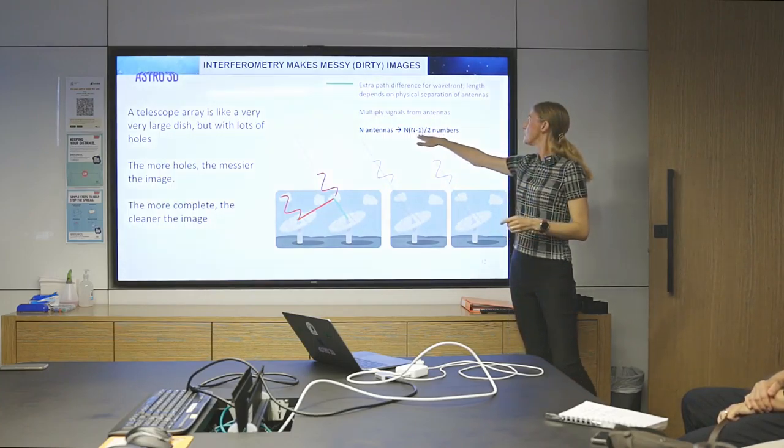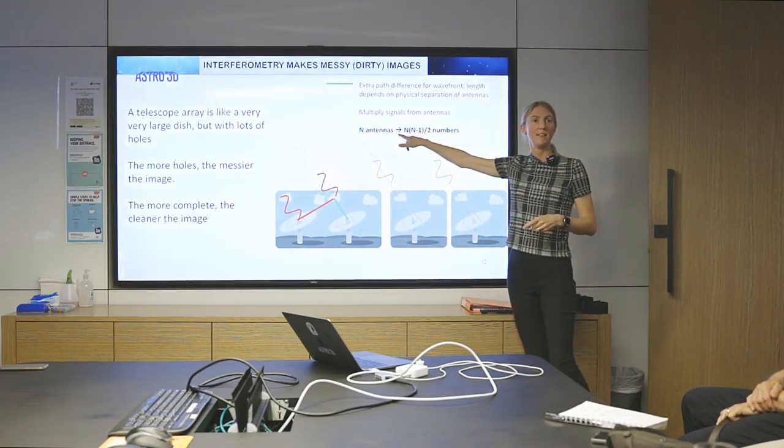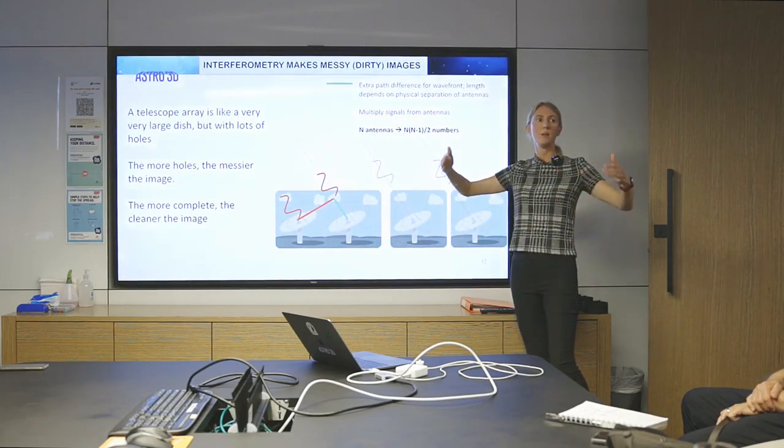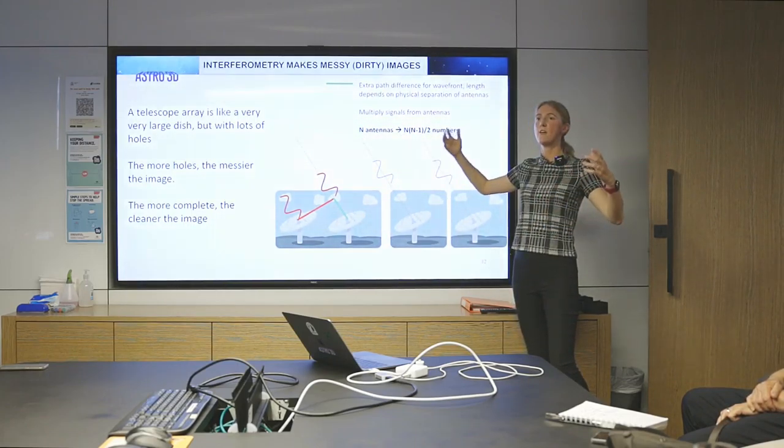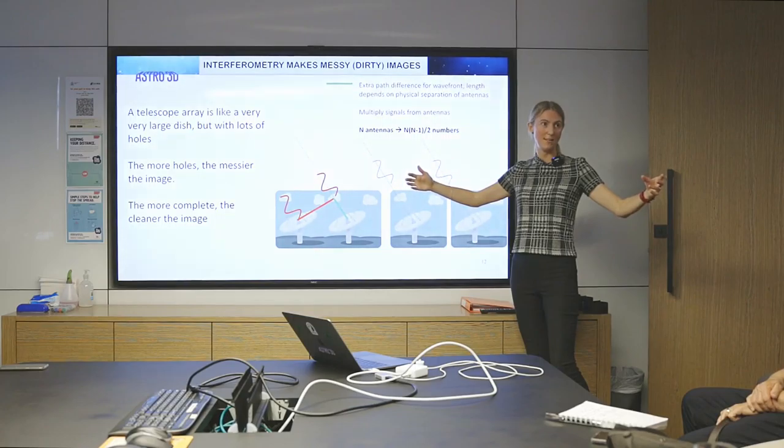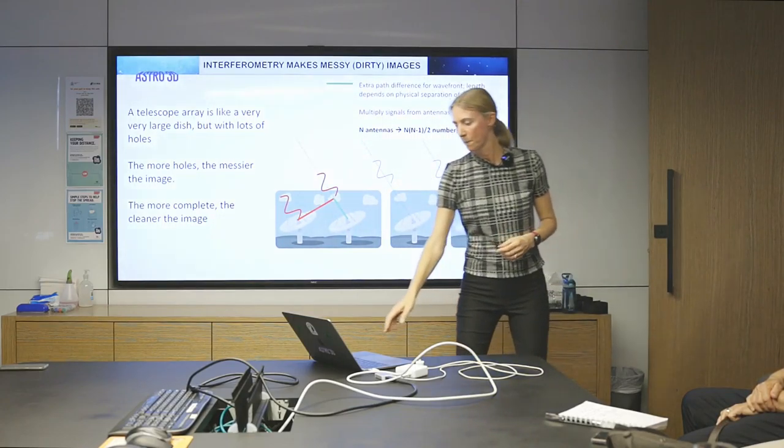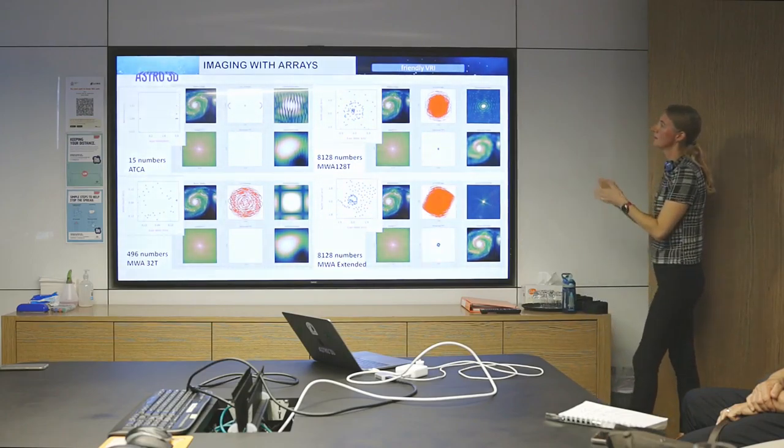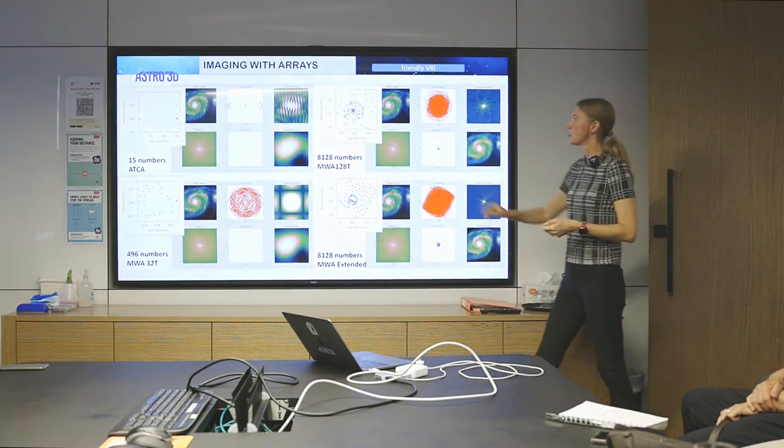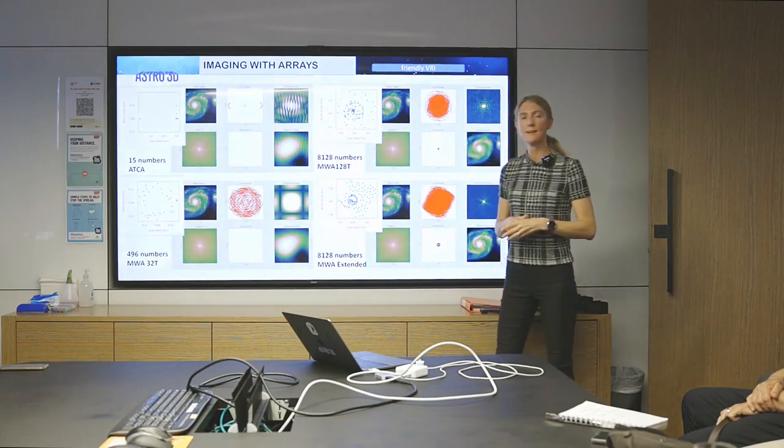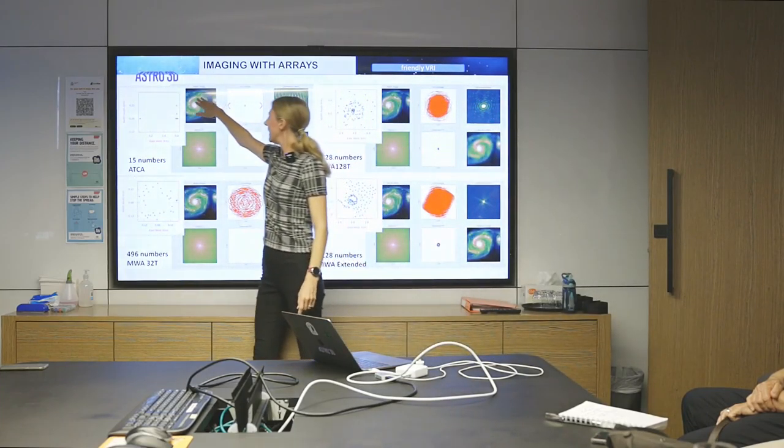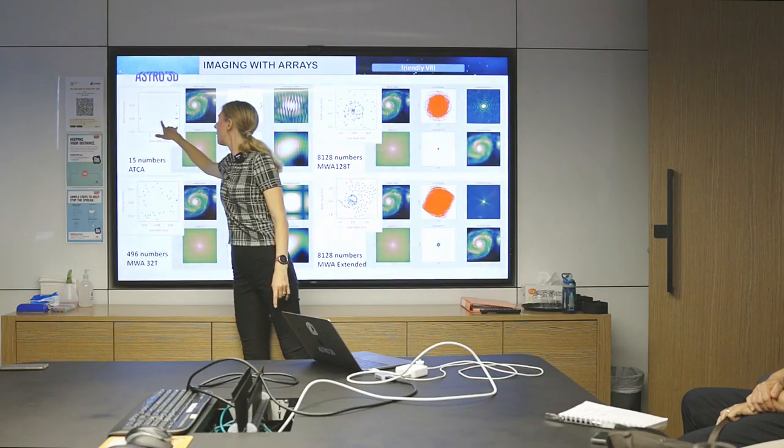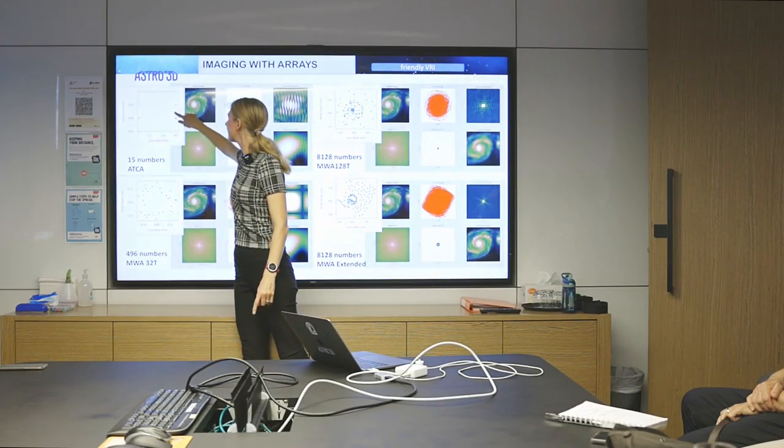But we also start to build up numbers really quickly. The number of baselines that we have, in other words, the number of measurements, there's one for each pair of antennas, goes effectively as n squared, if n is the number of antennas you have. So if you start to build a bigger and bigger telescope, you suddenly have more and more and more measurements that you need to take into account.